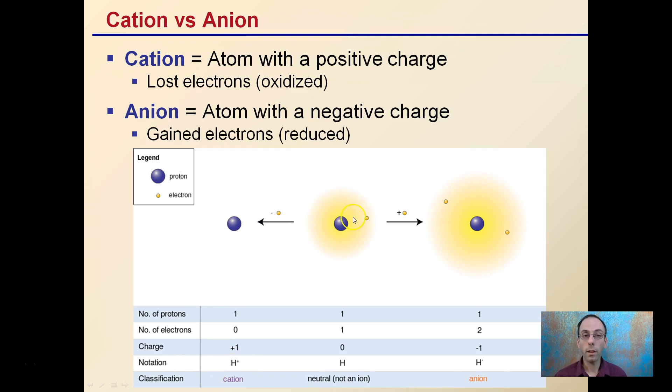In contrast to that, an atom with a negative charge is an anion, so here we're gaining another electron. Electrons have a negative charge. It's being reduced, and we have the hydrogen anion here. So anion negatively charged, cation positively charged. Since this is cation exchange capacity, it's the ability for soils to exchange positive ions.